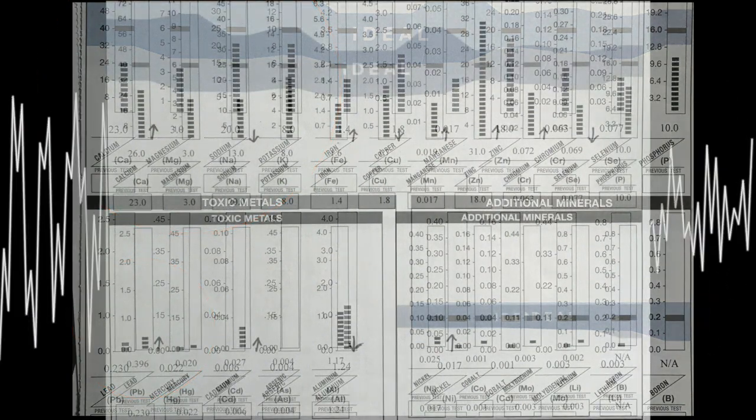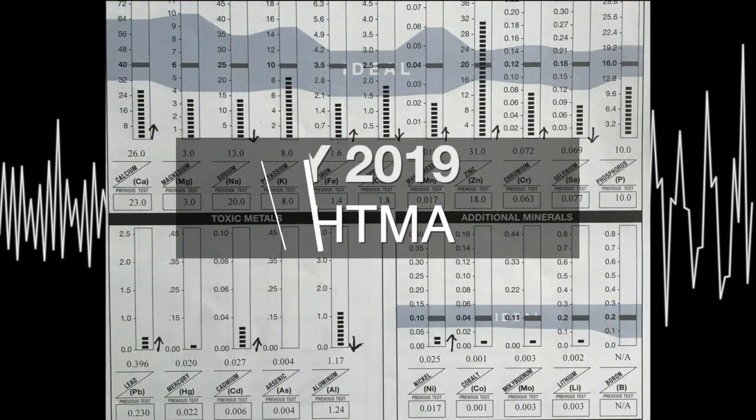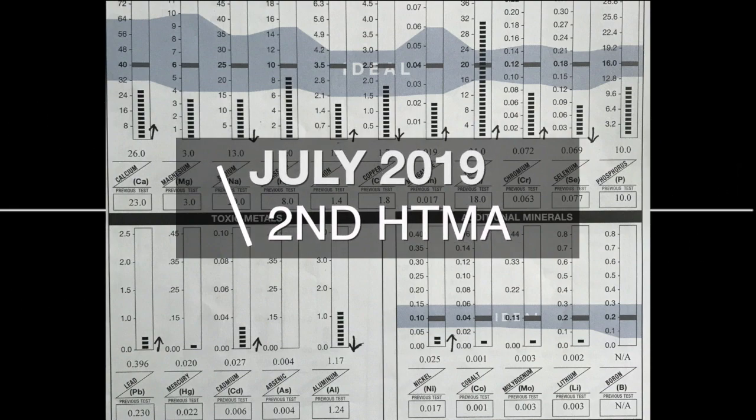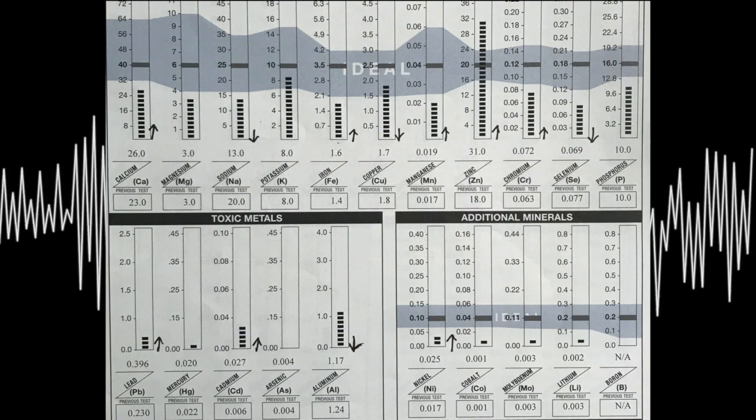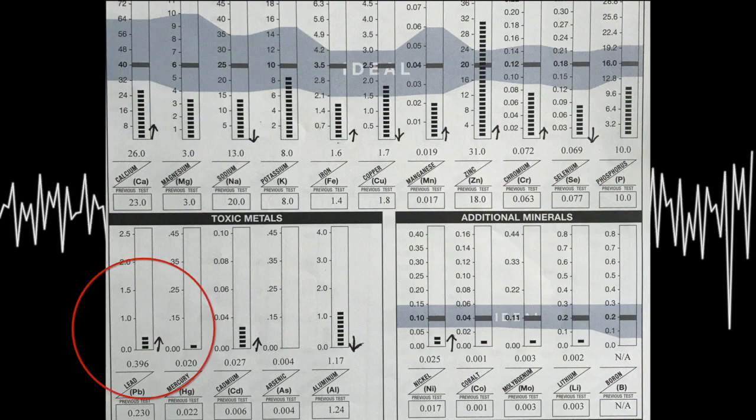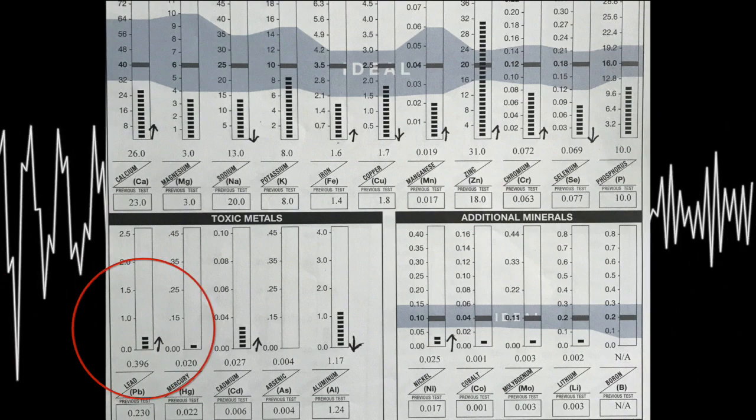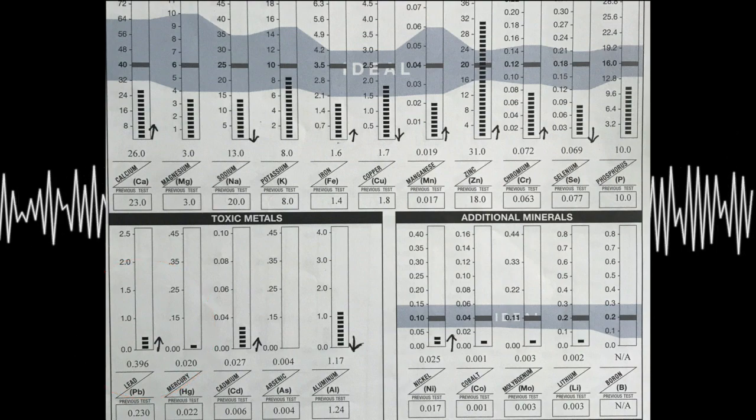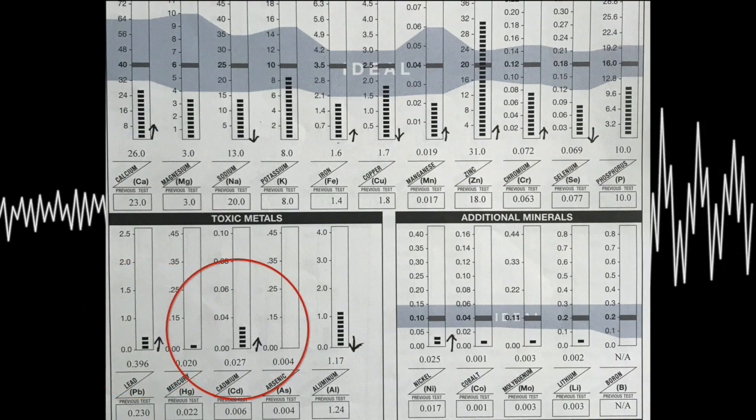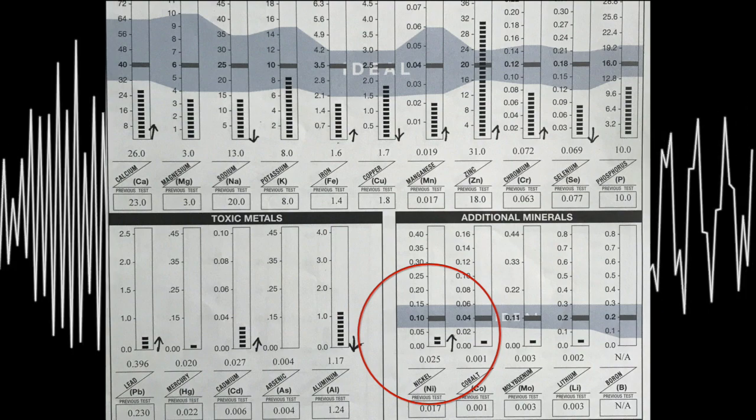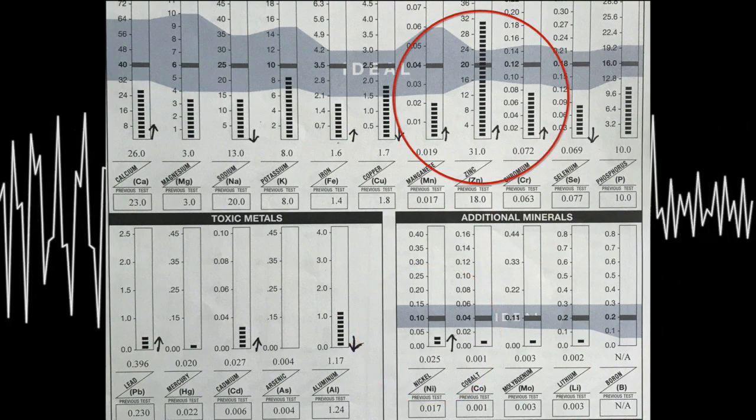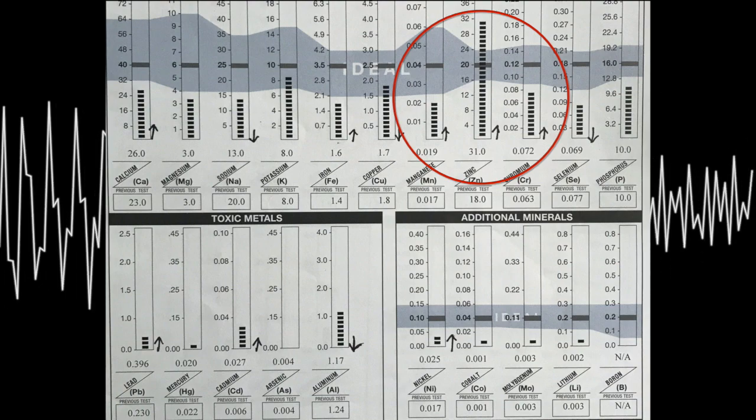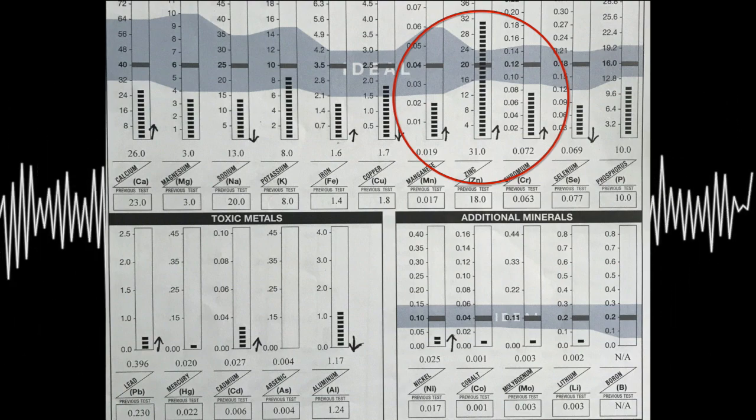About five months later, we ran her second hair tissue analysis in July of 2019. And we see that the thing that stood out for me is the lead went up. Okay, we're starting to mobilize a little bit more lead out of the tissues. We see the cadmium going up. We see the aluminum went down a little bit, but the nickel went up. And then all of a sudden, we see the zinc skyrocketing. It went from a good 18 to now a 31.